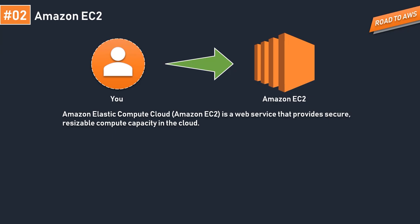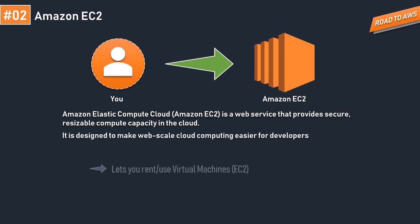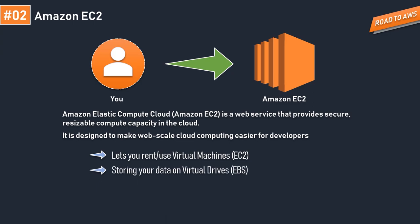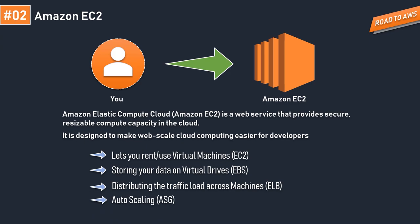An important point we often get confused about: Amazon EC2 is not itself a computing instance. It's a service that provisions a computing environment with different flavors of configuration and provides a means to choose the type of instance that meets our needs. It is designed to make web-scale cloud computing easier for developers — helping us rent a virtual machine, store data on Elastic Block Store (EBS), manage traffic with Elastic Load Balancers (ELB), and scale instances with auto scaling groups.